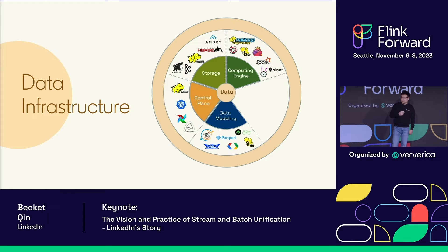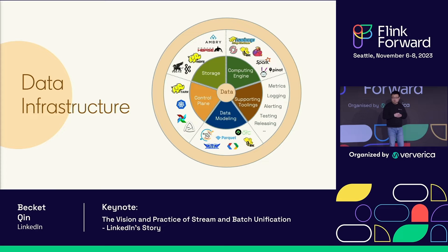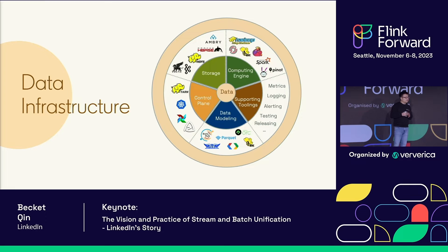You need data modeling, which helps you to define your data format, define your schema, manage your metadata, and also do things like data lineage. Last but not least, you also need some supporting toolings, which includes metrics, logging, alerting, testing, releasing, security, stuff like that. So all those five categories compose the data infrastructure that we can rely on to develop our data applications.